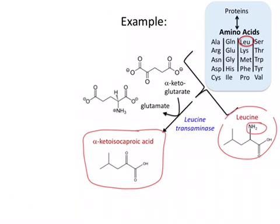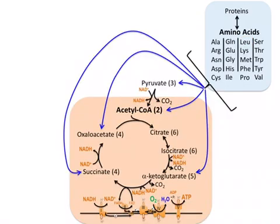For example, maple syrup urine disease is caused by a deficiency in branched-chain ketoacid dehydrogenase, and this organic acid as well as some others build up, causing the disease. The organic acids from amino acid catabolism are further metabolized, and depending on the starting amino acid, they can be converted to pyruvate, to acetyl-CoA, or to intermediates of the TCA cycle. That is a big-picture overview of how all of the amino acids get catabolized.